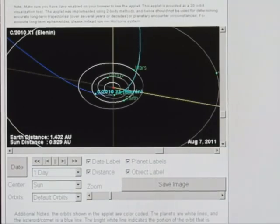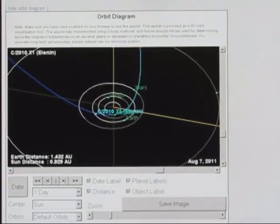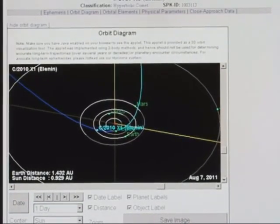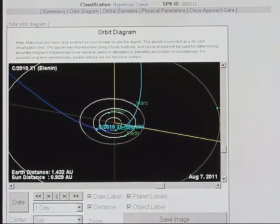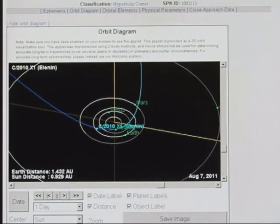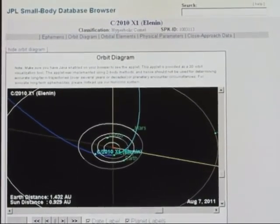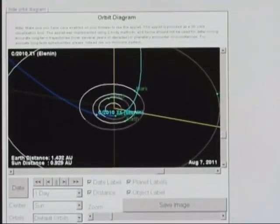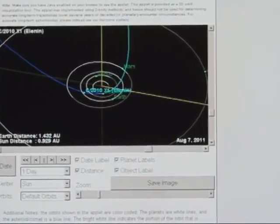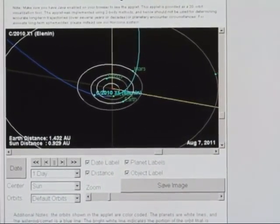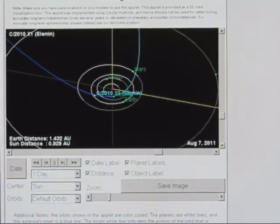There is available on the internet a website from the Jet Propulsion Lab ssd.jpl.nasa.gov and there you can find a JPL small body database browser. Basically it allows you to play with and demonstrate the orbital dynamics of objects in space for which they understand the ephemeris.